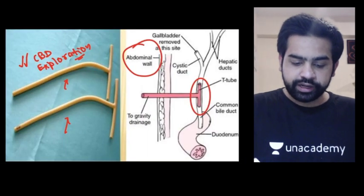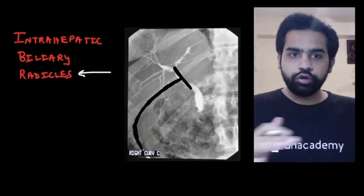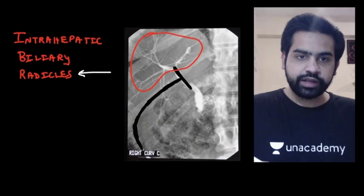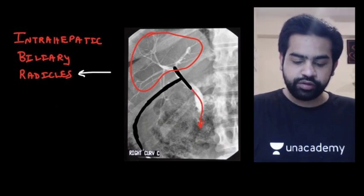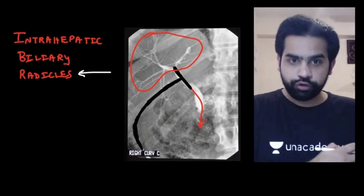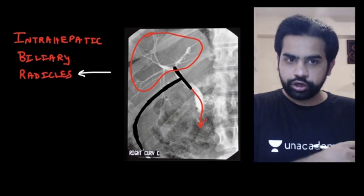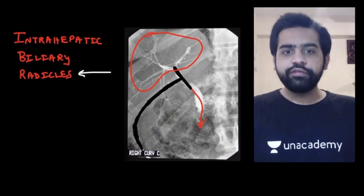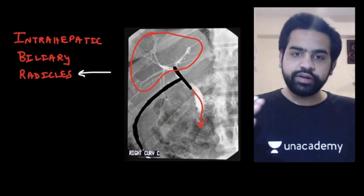On post-operative day 7 or 8, you perform T-tube cholangiography by injecting dye through the external end of the T-tube. The dye fills up the intra-biliary radicles and the distal CBD. If there is any retained stone, you will see a filling defect. If the cholangiography is clear with no stone, you can remove the T-tube on post-operative day 9 or 10.